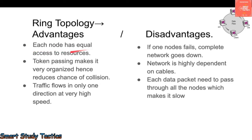Advantages of ring topology: each node has equal access to resources. Token passing creates a very organized way of communication, reducing chances of collision. Traffic flows in one direction at very high speed because all data follows the same single path, allowing data to flow efficiently.